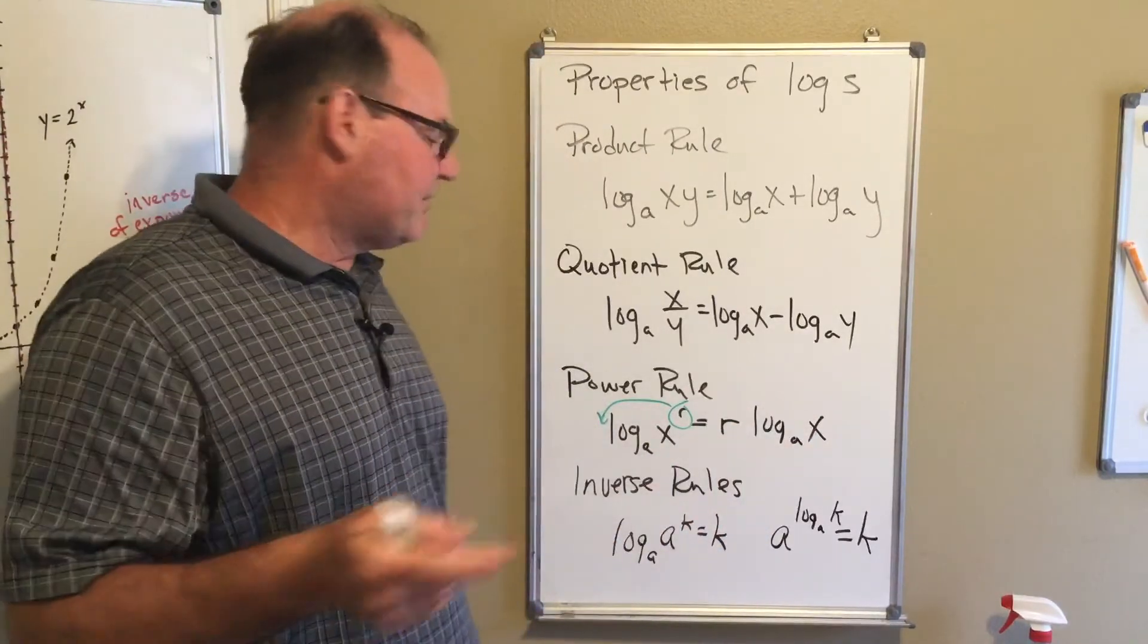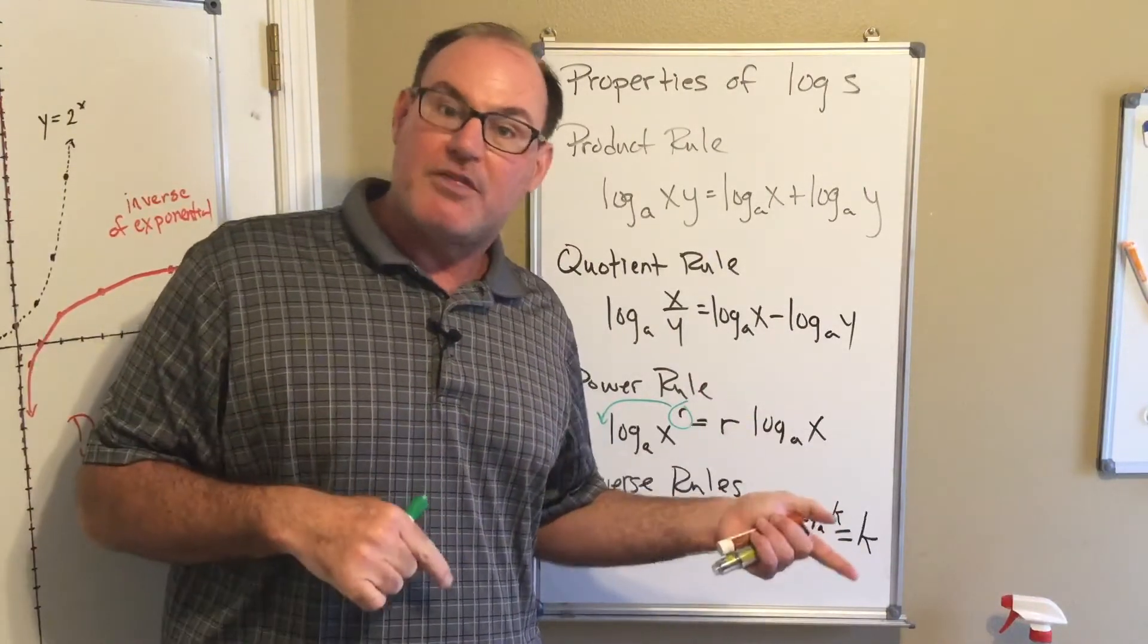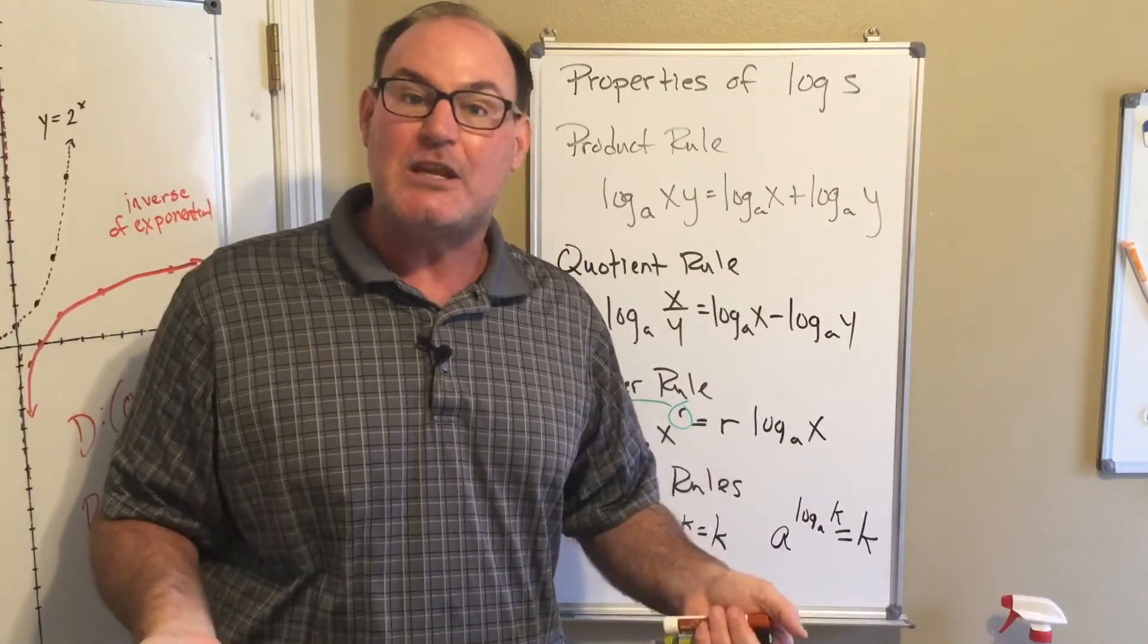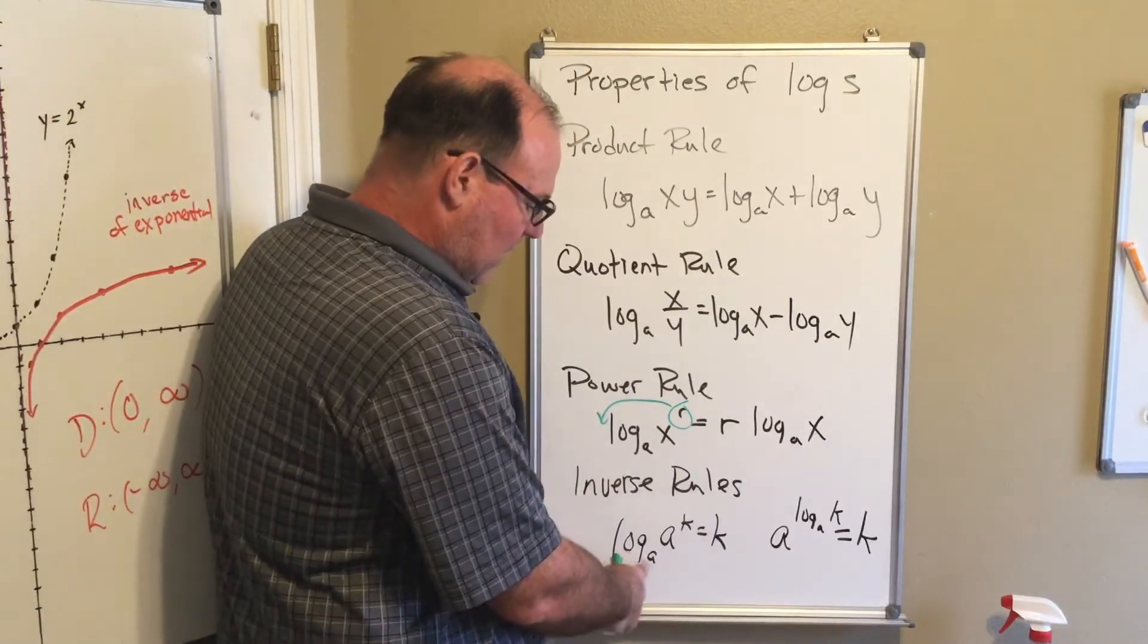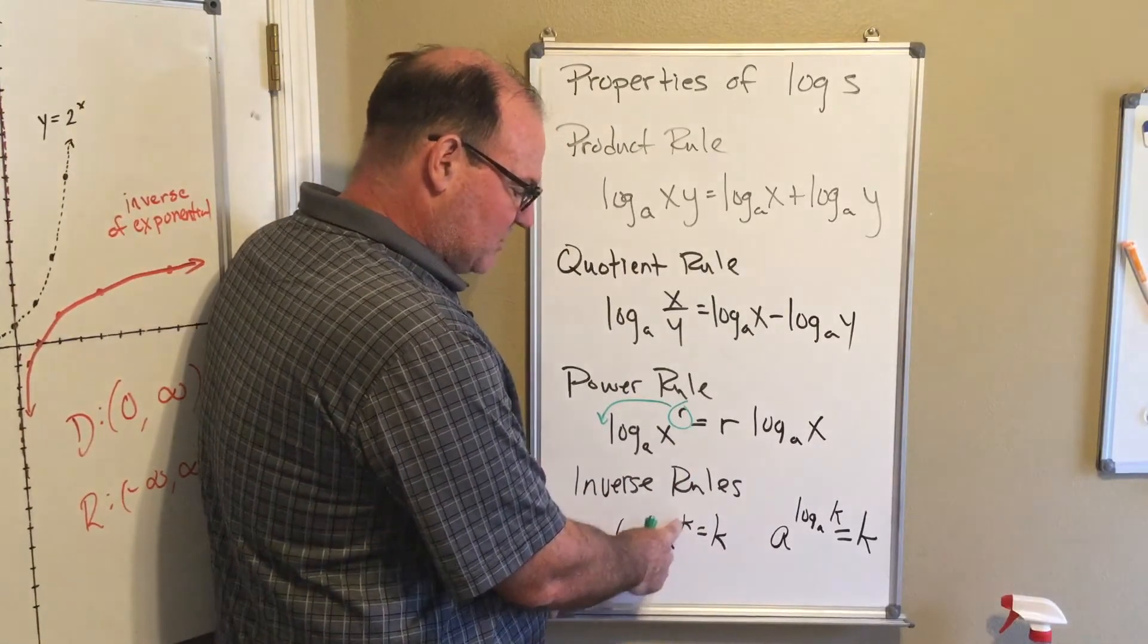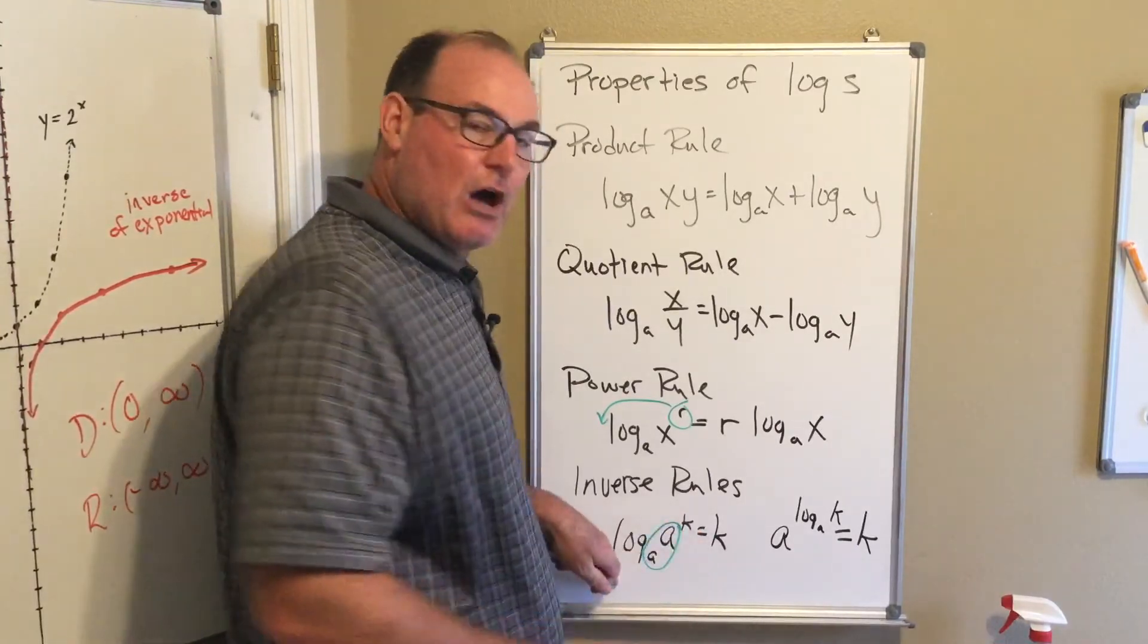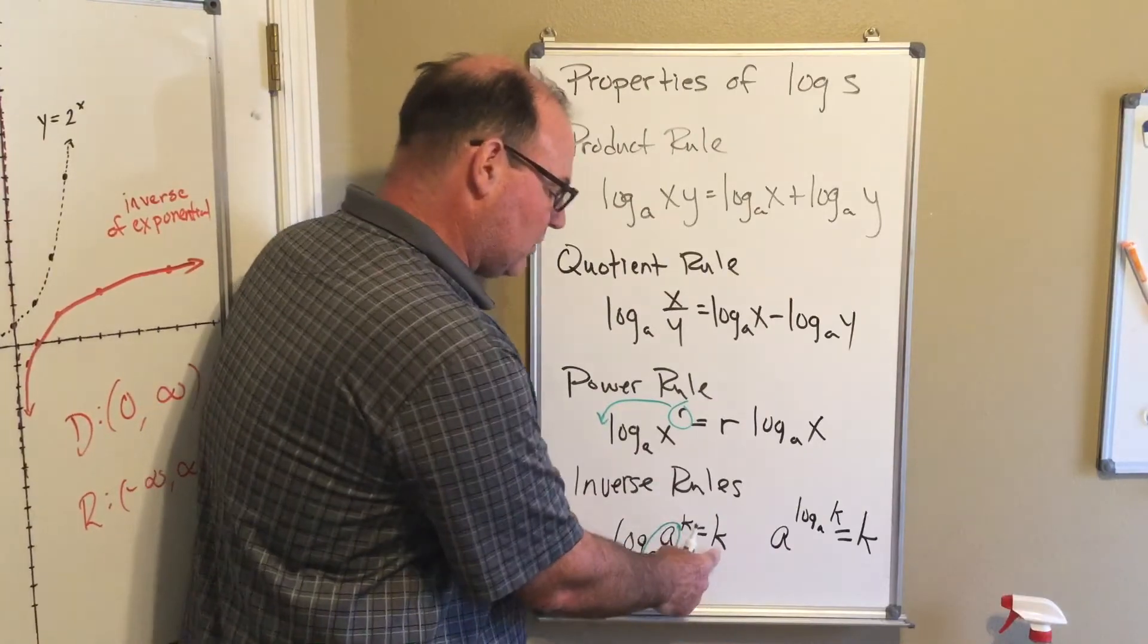And then finally, the final two properties, these are just based on the fact that the exponential and the logarithm are inverses. That was our very first graph we did in the first video of this section. So because they're inverses, if I have the log base a of a to a power, notice the base of the exponential and the base of the logarithm are the same. Those are inverses and they cancel and you just have k.